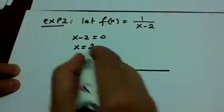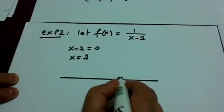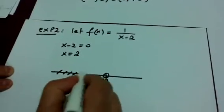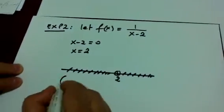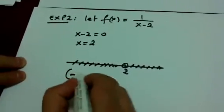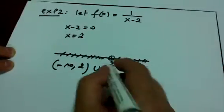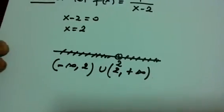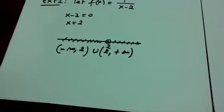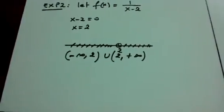So the domain is all real numbers except two. We put an open circle to exclude the two. In interval notation: negative infinity to two, open, union open two to positive infinity.